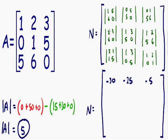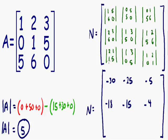Moving on to the middle left: 2 times 0 is 0, and 3 times 6 is 18 — so 0 minus 18 is negative 18. For the center: 1 times 0 is 0, and 2 times 5 is 10 — so that gives negative 10. Wait, 1 times 6 is 6 and 2 times 5 is 10, so 6 minus 10 is negative 4. For the bottom left: 2 times 5 is 10, and 3 times 1 is 3 — so 10 minus 3 equals positive 7.